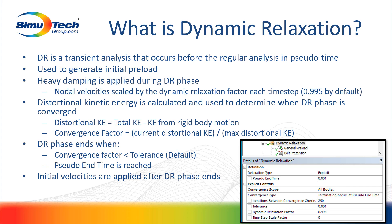Whatever loading is generating the preload, by default it'll scale all the nodal velocities at every time step by the dynamic relaxation factor, which is 0.995 by default. As the dynamic relaxation portion runs, it'll calculate the distortional kinetic energy, which is used to determine when the dynamic relaxation phase has converged. The distortional kinetic energy is your total kinetic energy minus the kinetic energy from rigid body motion — essentially a vibrational kinetic energy. The convergence factor is the current distortional kinetic energy divided by the maximum distortional kinetic energy at any point during the dynamic relaxation phase, looking for a significant decrease in kinetic energy over time.